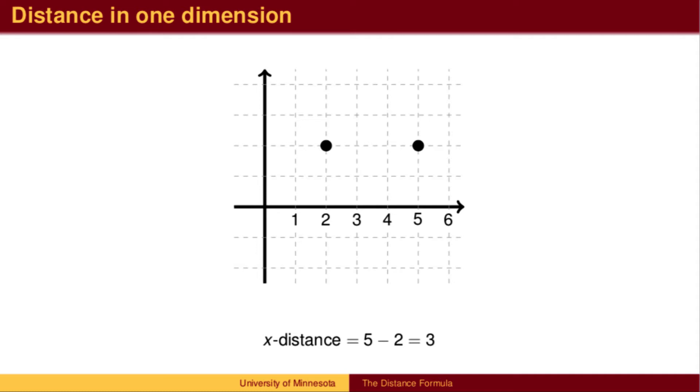If we are given two points with the same y-coordinate, we can find the x-distance by subtracting the x-values.